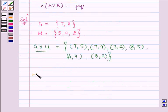Now we need to find out H cross G also. It will be such that the first element belongs to H and the second element of the ordered pair belongs to G.